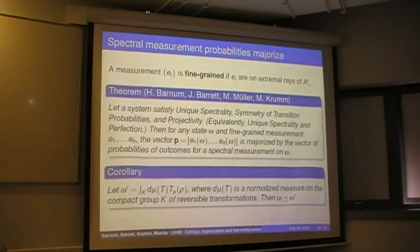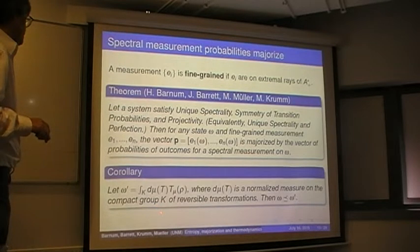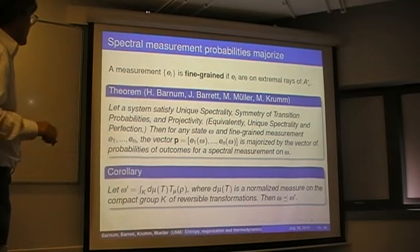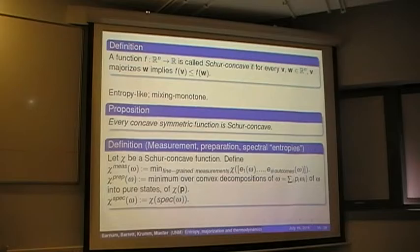So this is our main result. It's just one step on the way to having a good thermodynamics for GPTs, having a set of postulates that give us a good thermodynamics for GPTs. And it has as a corollary that if you can write the state as a mixture of reversible transformations of some other state, then that mixture state, its spectrum is majorized by that of the additional state.